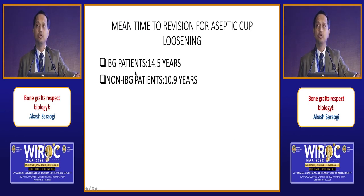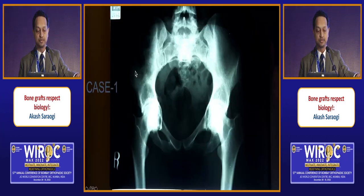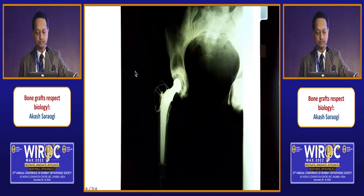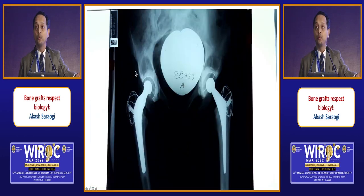Revision rates: only two patients revised in the IBG group for cup loosening versus six in the non-IBG group. Mean time to revision was 14.5 years in the IBG patients versus 10.9 years in the non-IBG patients. A typical case showing a protrusio with well-done cemented hip and some linear wear of the plastic, still well-fixed and doing well at 18 years.